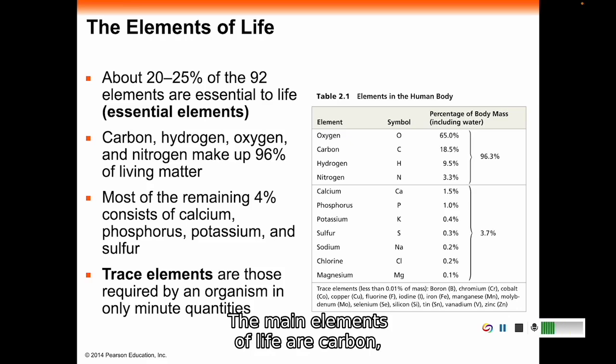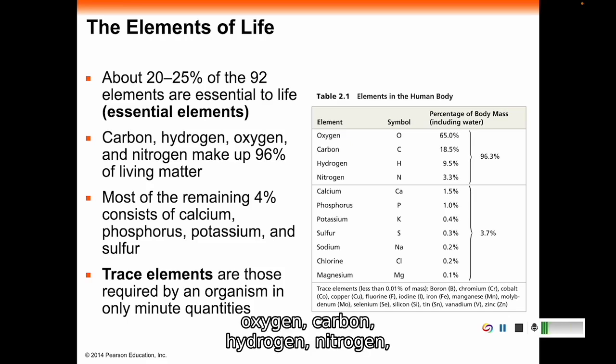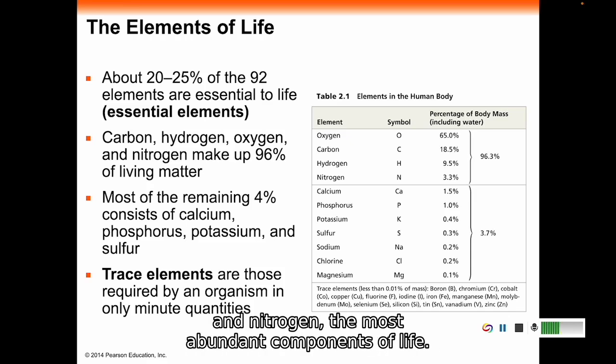The main elements of life are carbon, hydrogen, oxygen, and nitrogen. Those are the four most abundant elements in the human body and in most living things. You should be able to tell me that: oxygen, carbon, hydrogen, and nitrogen. The most abundant components of life.